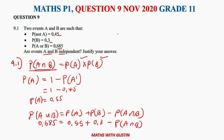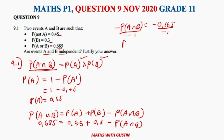Simplifying and dividing by negative one on both sides: the probability of A and B equals 0.165.